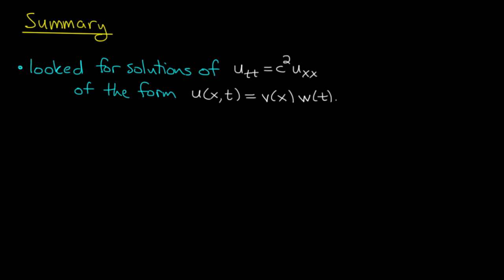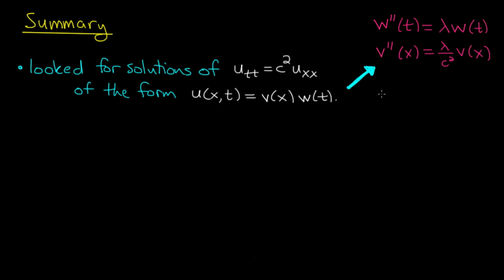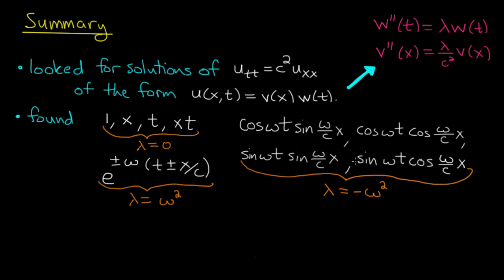We've done quite a bit in the last 15 or so minutes, so let me end with a quick summary. The first step was to look for solutions of the wave equation as a product of a function of x and a function of t. We then found, by calculation, that W and V satisfy certain ordinary differential equations depending on a parameter lambda — the separation constant. We solved those ODEs and got a whole pile of solutions based on whether lambda equals zero, lambda is positive, or lambda is negative. All of these solutions will allow us to solve initial value problems and boundary value problems, which we will do in follow-up videos.